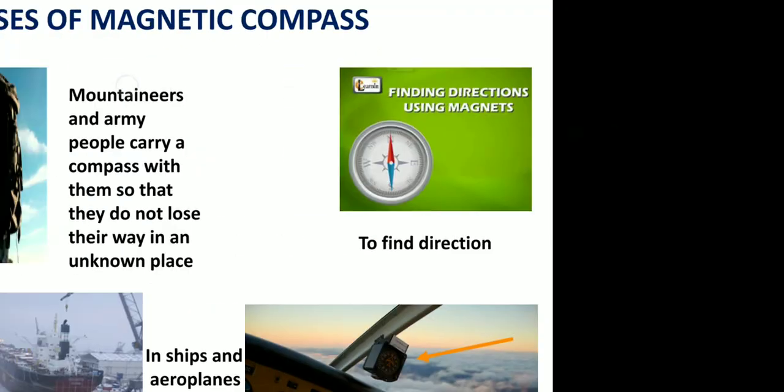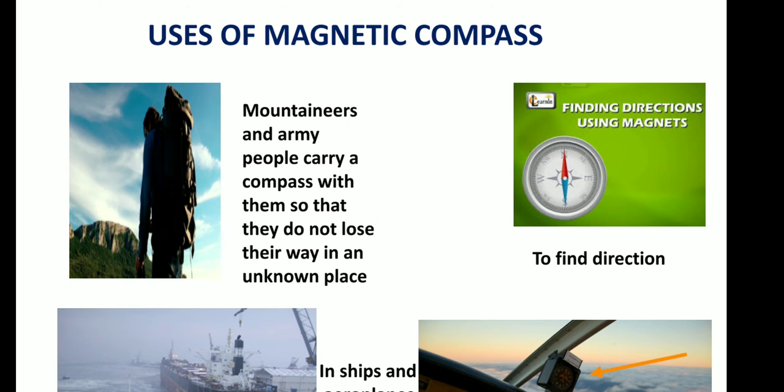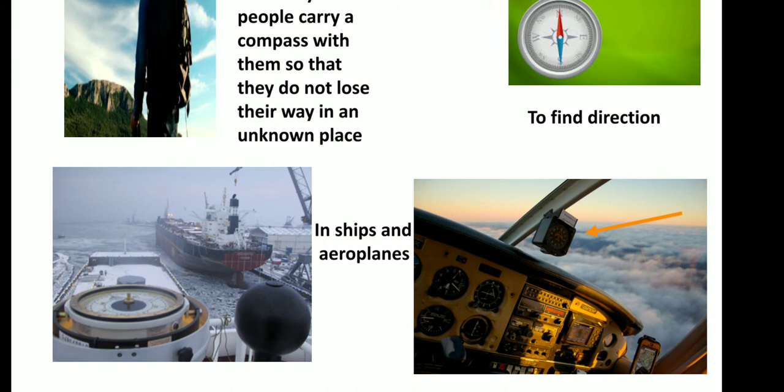Coming to the uses of a magnetic compass. The first main use is to find direction. Even mountaineers and army people carry a compass with them so that they do not lose their way in an unknown place. It is also used in ships and aeroplanes to find out the direction.